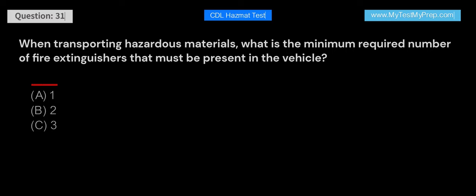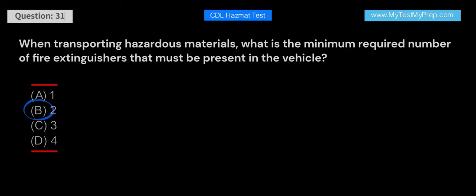When transporting hazardous materials, what is the minimum required number of fire extinguishers that must be present in the vehicle? A. 1. B. 2. C. 3. D. 4. Answer: B. The minimum required number of fire extinguishers that must be present in the vehicle is 2. Having at least two fire extinguishers ensures that the driver has the necessary resources to respond to a fire involving hazardous materials.